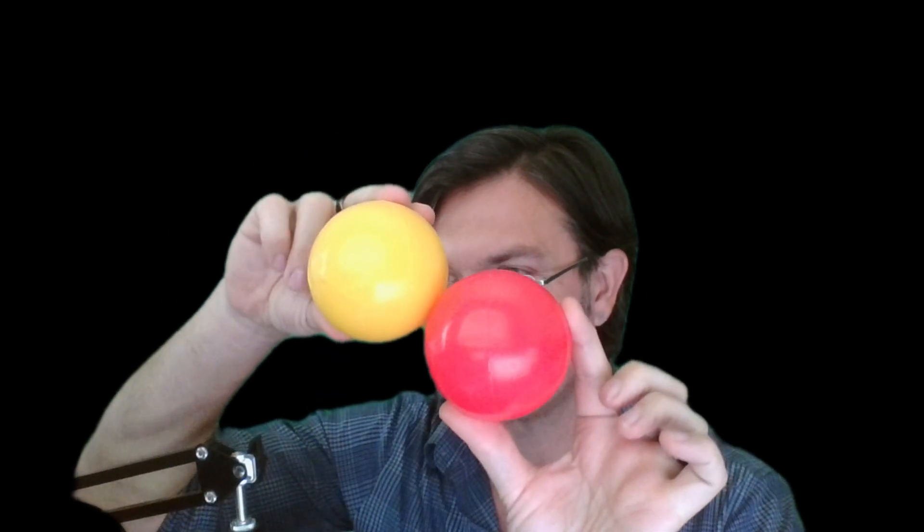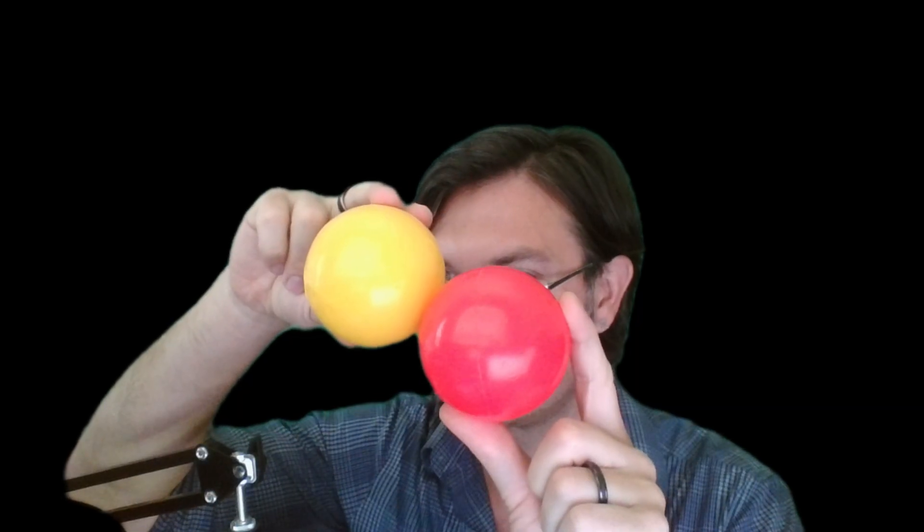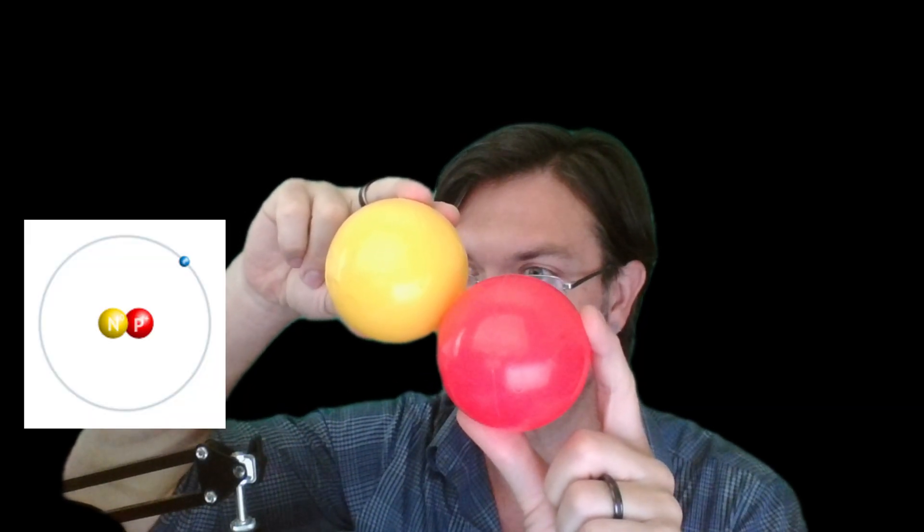So we're going to be looking at the least complex nucleus that still has some complexity. If this is a proton, this technically would be the least complex nucleus, right? Just the nucleus of a hydrogen. But if we add one neutron to it, now we have the nucleus of deuterium, commonly called deuterium.